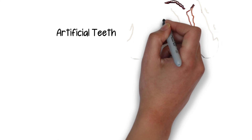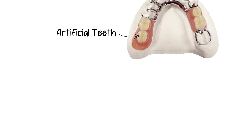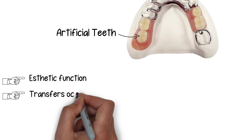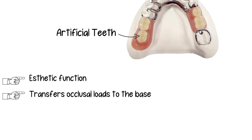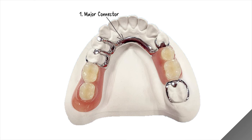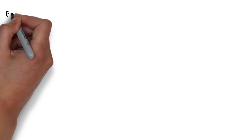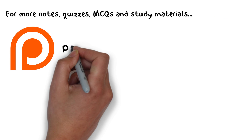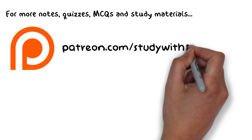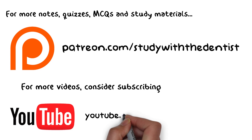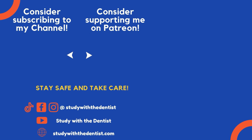Finally, we have the artificial teeth resting on the denture base. Apart from looking aesthetically pleasing while talking and smiling, these teeth also play a role in transferring occlusal forces to the denture base. This was just a short overview of the different components of a removable partial denture — in later videos I will discuss these parts individually in more detail. For more study materials such as study notes, practice questions, and quizzes, check out my Patreon page at patreon.com/StudyWithADentist. Take care and goodbye.